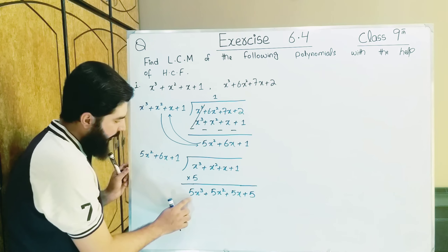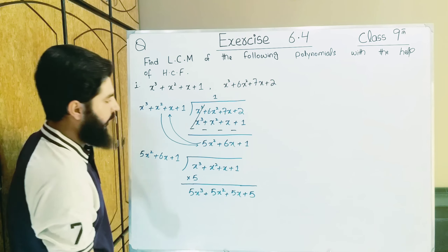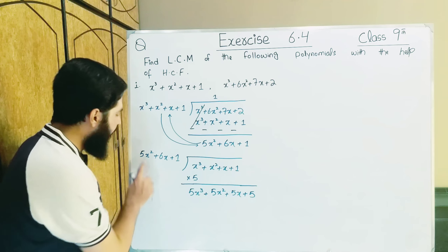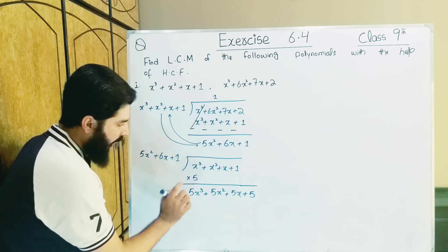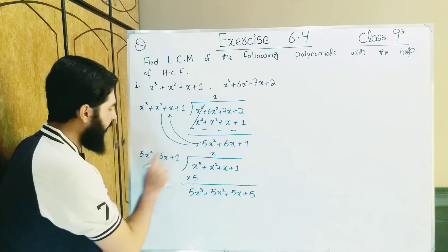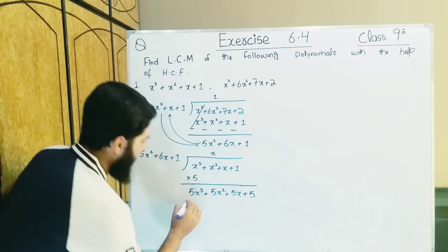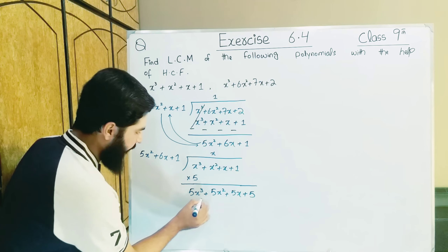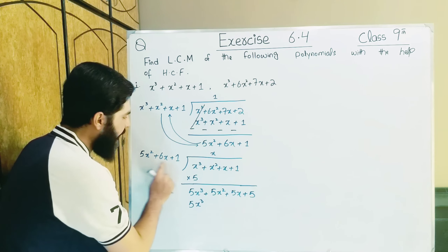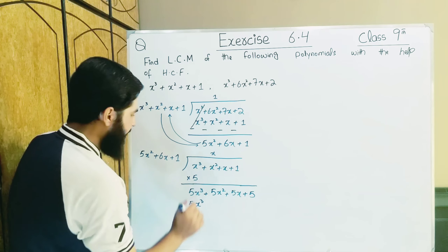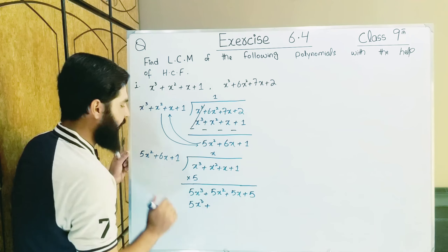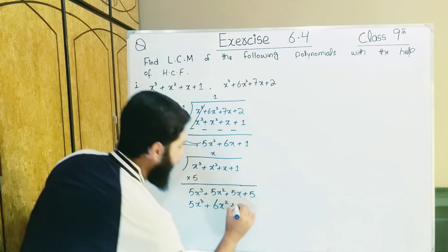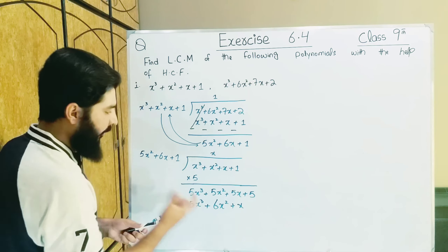Now we have 5x³. Here we have 5x². What value do we write such that when multiplied gives 5x³? Since 5x² is already there, only 1x is missing, so we write x. When these two multiply: 5 stays same, x² × x gives x³. Then x multiplied by all: plus gives plus; 6x × x gives 6x², plus x × 1 gives x.